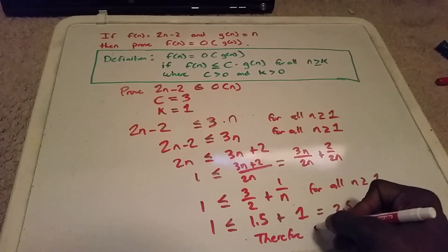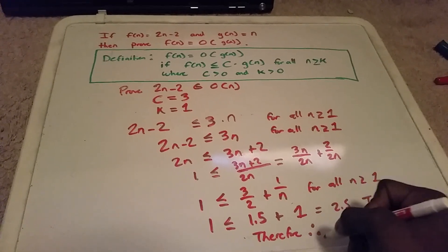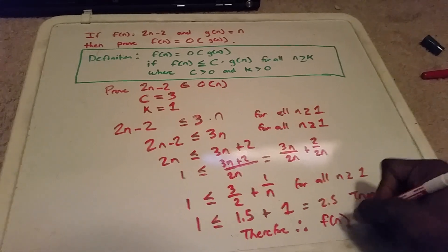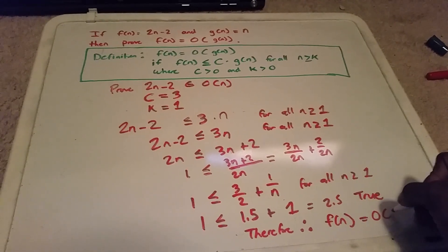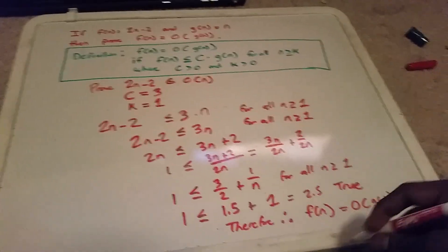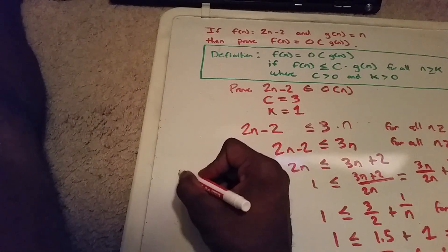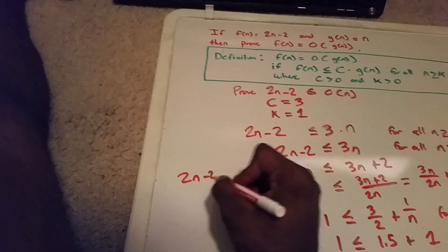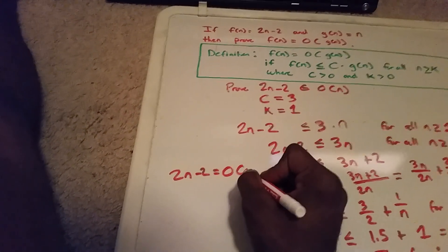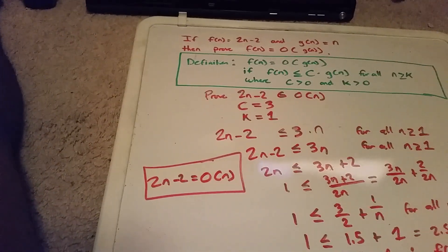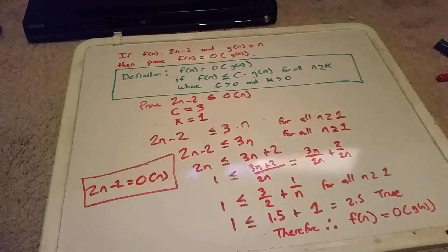Therefore, f(n) equals big O of g(n). That is to say that 2n minus 2 equals big O of n. Thank you.